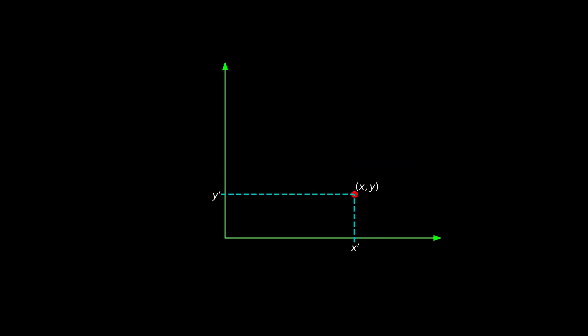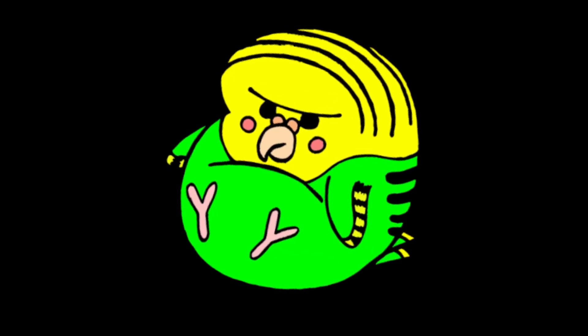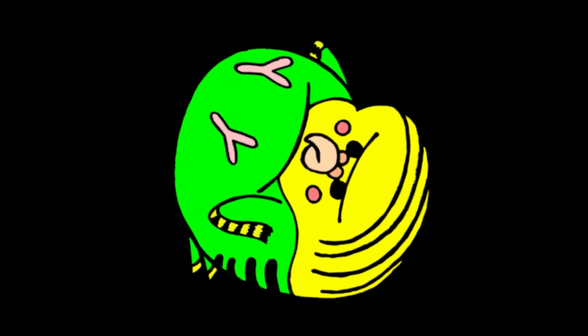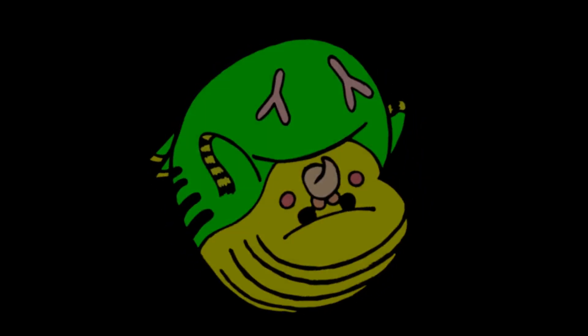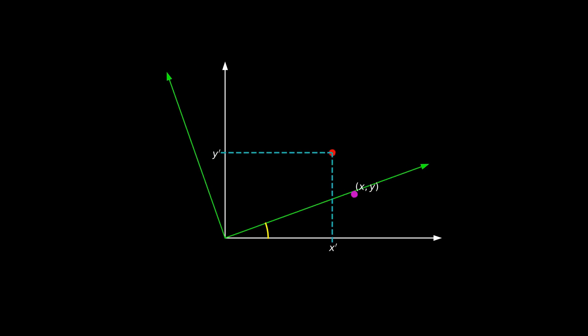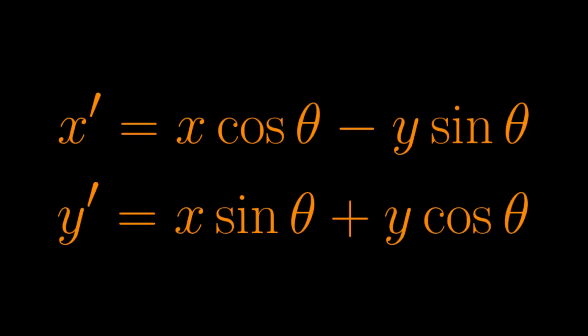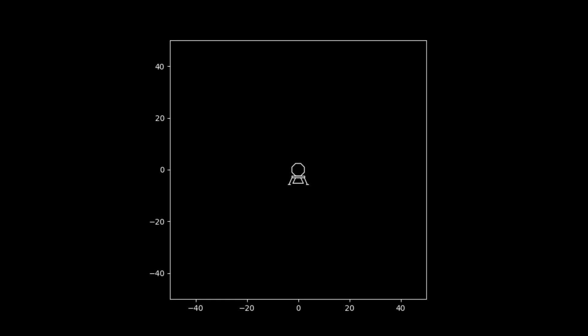That's all well and good, but what about when y doesn't equal zero? Like in this example, with a point located at x, y. I spent ages making all these diagrams, so I'm using them. Let's just smash this thing out quick — some maths, and here's the result. Now let's apply this to the lander.